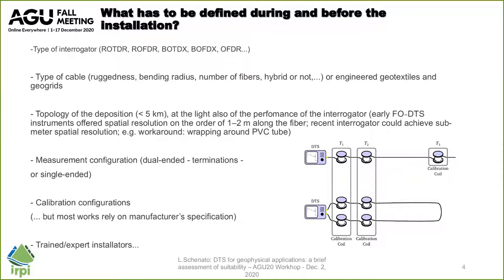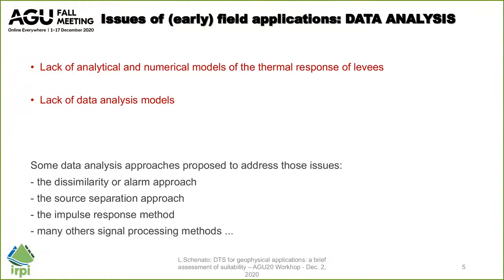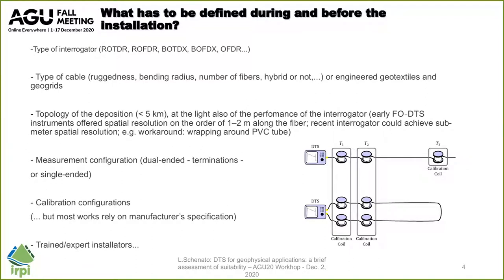In the planning of a DTS survey, one must define different aspects and details about the system. One important thing that has to be chosen is the kind of interrogator to use. Nowadays we have different options: Raman OTDR, Raman OFDR, Brillouin OTDR, Brillouin OFDR depending on the time or frequency domain, or even Rayleigh OFDR.